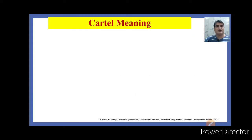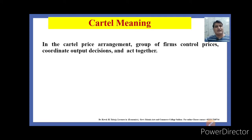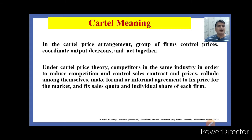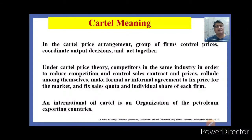What is the cartel meaning? In the cartel price arrangement, a group of firms control prices, coordinate output decisions, and act together. Competitors in the same industry, in order to reduce competition and control sales contracts and prices, collude among themselves, make formal or informal agreements to fix prices for the market and fix sales quota in individual shares of each firm. An international oil cartel is OPEC, the organization of petroleum exporting countries.